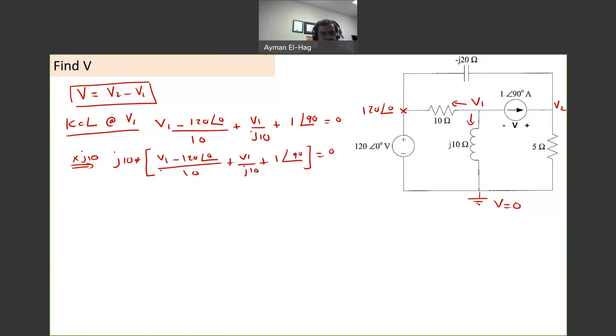So we'll multiply this, J10 times the first term, 10 will cancel, so we'll have J times V1 minus 120 angle of zero, plus J10 times V1 over J10, it will cancel, so plus V1 plus. Now what is J10 basically? J10 is nothing but 10 angle of 90. So I multiply J10 times 1 angle of 90, you multiply the magnitude 1 times 10, so this is equal to 10, 90 plus 90, which is 180, equal to zero.